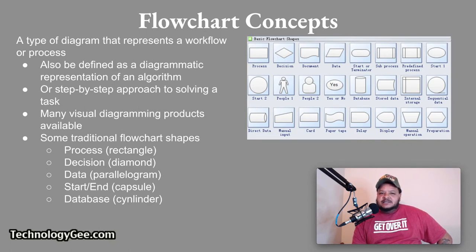Here are some of the traditional flowchart shapes used for programming concepts. So you have when you're out there designing stuff, if you want to represent what a process would be in the chart, you would use the rectangle, a decision will be a diamond, data will be a parallelogram, start and end will be a capsule, and a database will be represented by the shape of a cylinder.